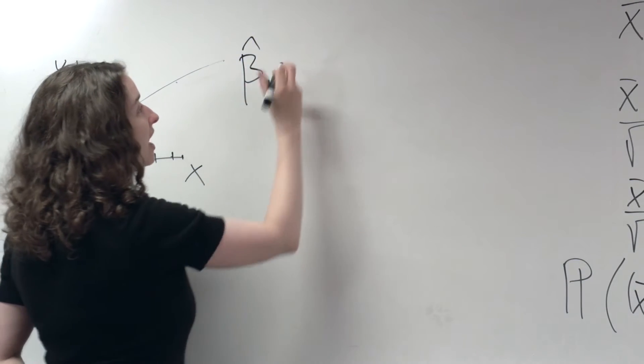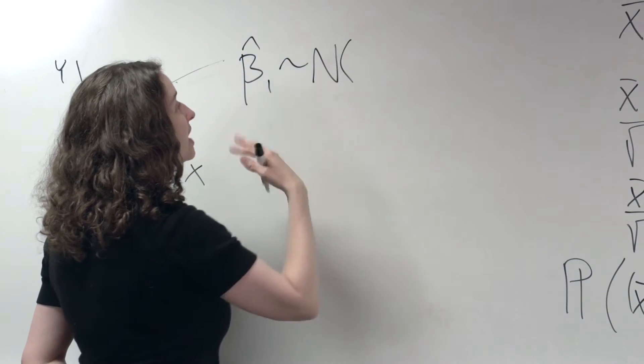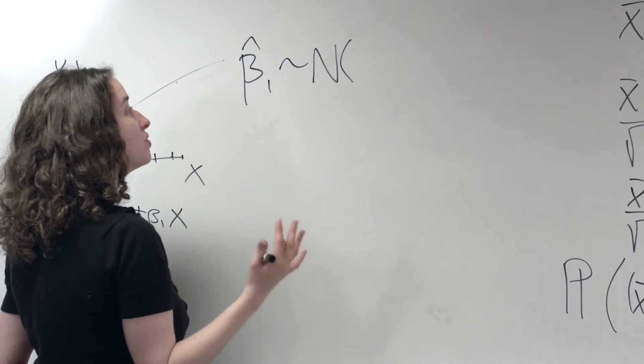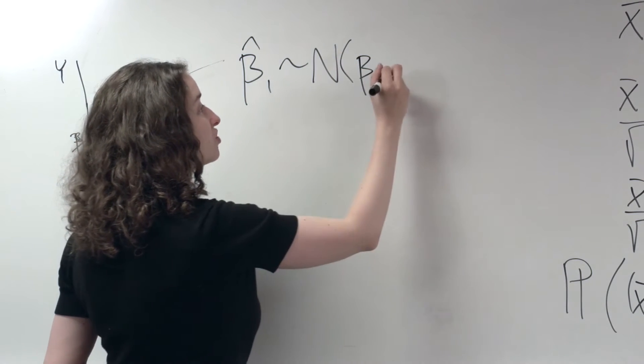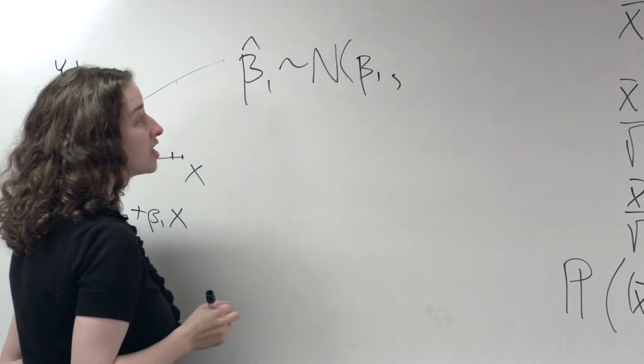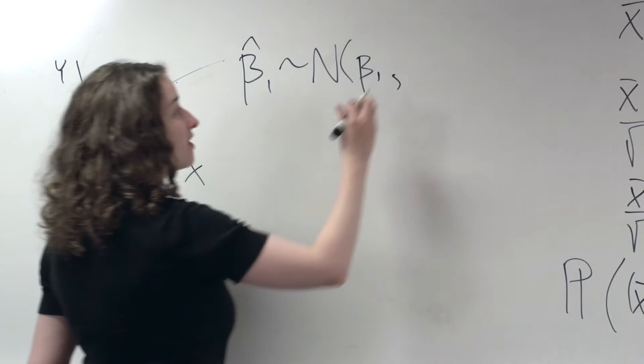So I've got beta hat 1. If we repeatedly sample data from the true line, this will follow a normal distribution centered at the true slope with a particular variance. What is that variance going to be?